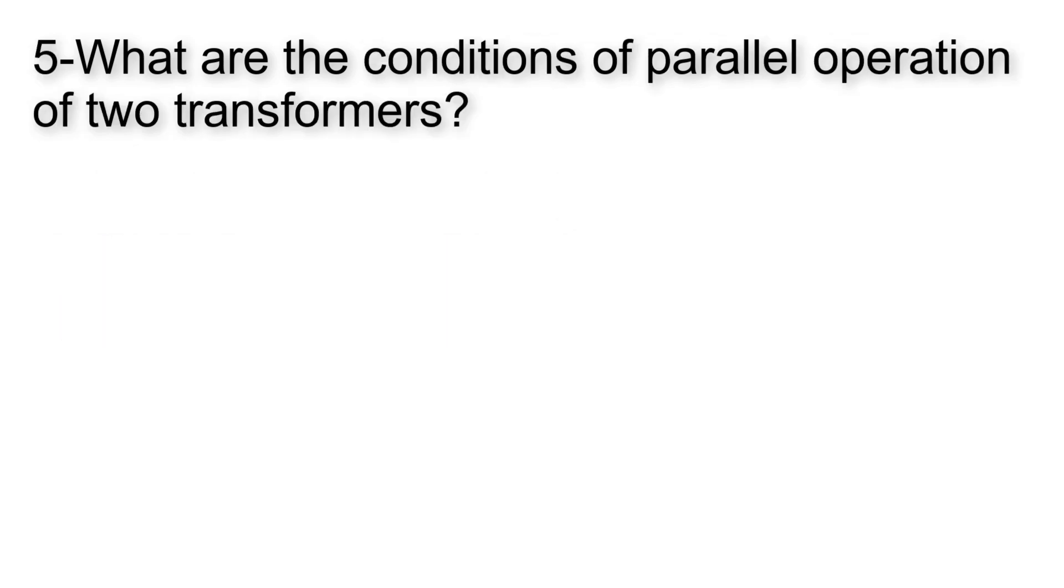What are the conditions of parallel operation of two transformers? Multiple transformers are said to be in parallel operation when the primary windings are connected together and connected to a common voltage supply. Also the secondary windings are connected together to a common load.